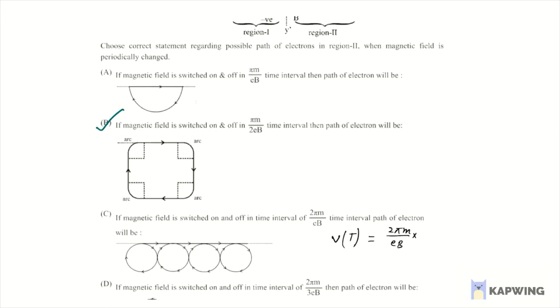Sorry, this is the time period and velocity is we can write it as v. So this is the v and this becomes 2π mv divided by EB. And for the radius we can write R equals mv by qB, where q is e.